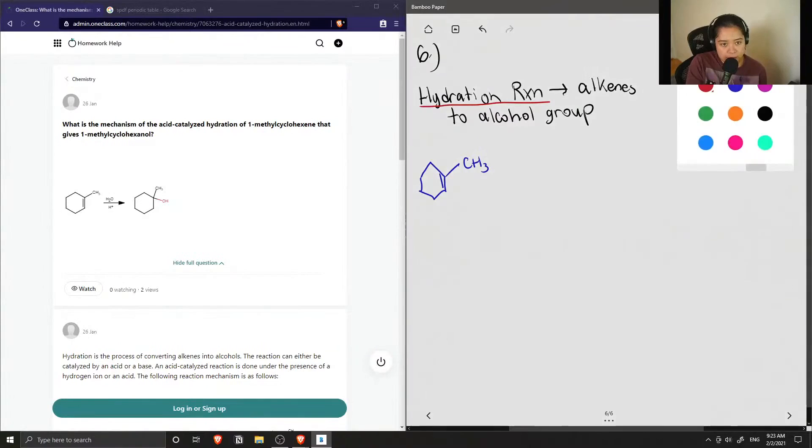The first step of the mechanism is that the double bond will be protonated under acidic conditions, since there's going to be some free-flowing protons when the reactant is placed in a solution with acid.